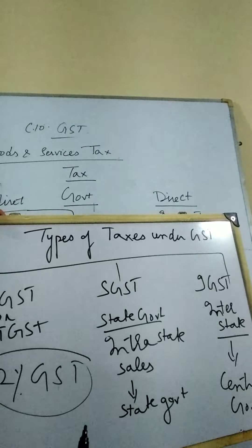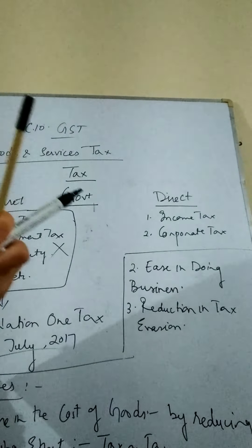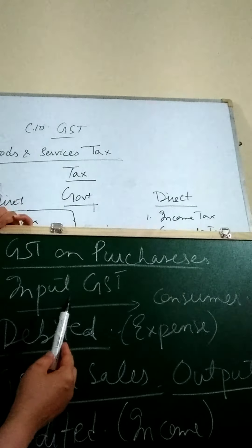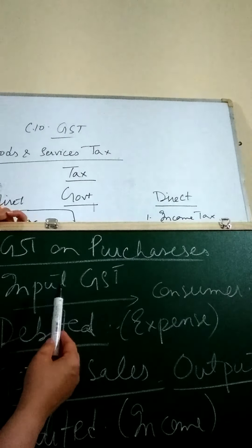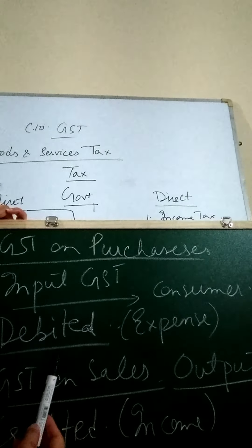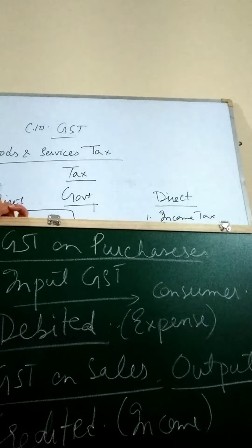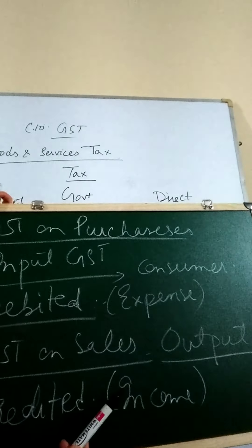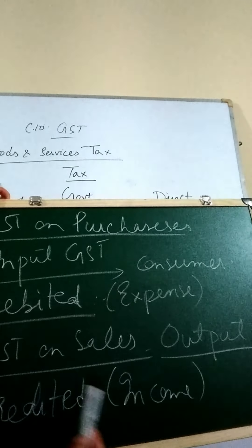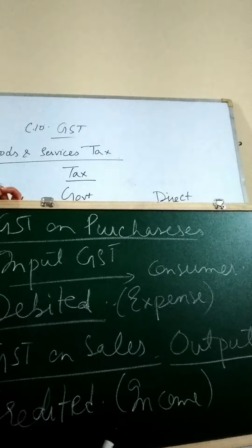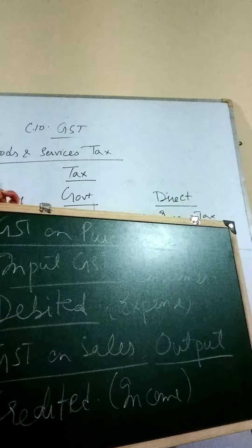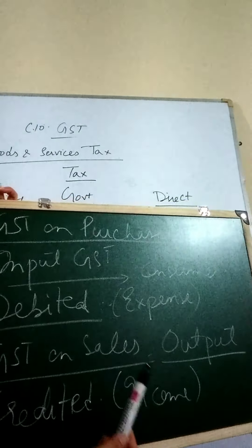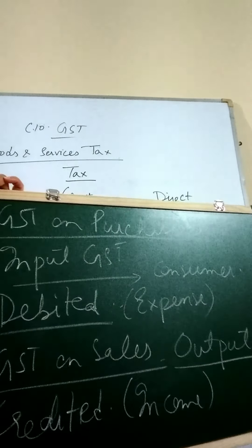Moving on to one more important thing — GST on purchases. If a commodity is being purchased, it is known as input GST, which will be paid by the purchaser. It is an expense for the purchaser, so it has to be debited. Then we have GST on sales. If we are selling the commodity, this GST becomes output GST. Since the ultimate payer will be the consumer, this GST is added into the cost of the commodity, so it becomes a credit — an income for the seller which ultimately will be paid to the Treasury of the Government.